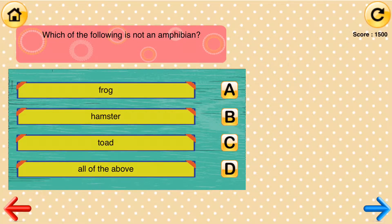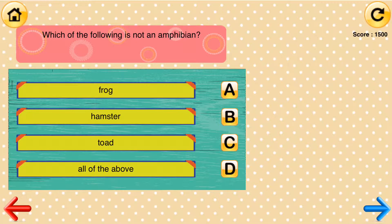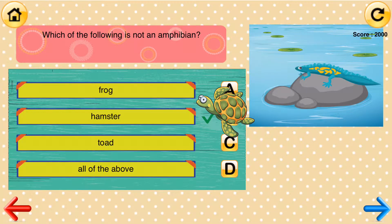Which of the following is not an amphibian? Frog, hamster, toad, all of the above. Hamster.